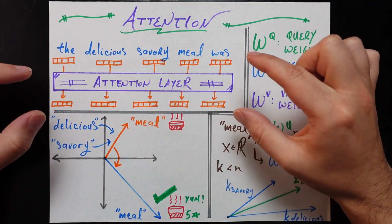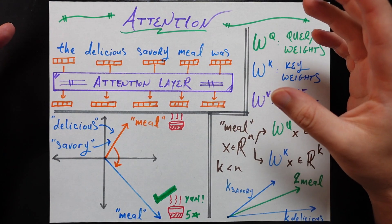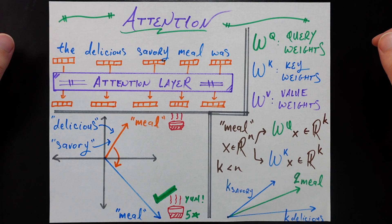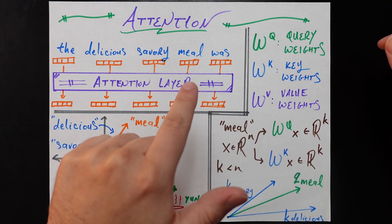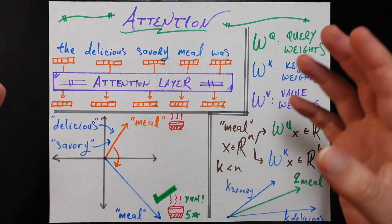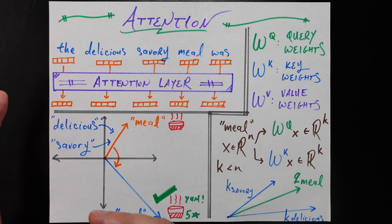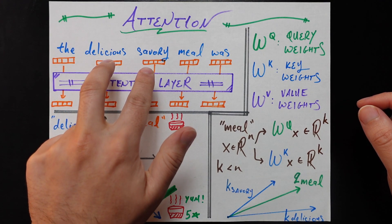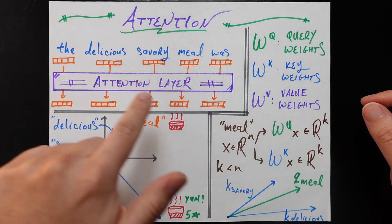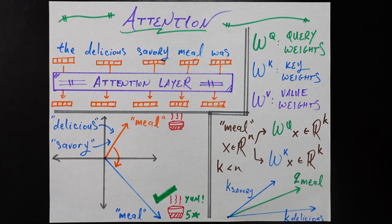Let's make that concrete using our example. What would we expect the attention layer to do? The goal is to predict the final word, which is going to be some sentiment corresponding to a meal that is delicious and savory. Doing that accurately requires knowing what the noun is — knowing if it's a meal or a movie — and also knowing what the modifiers on that noun are, namely that it's a delicious savory meal. So if I was the attention layer, I would try to make sure that the two adjectives and the noun pay a lot of attention to each other's vectors, because collecting all that information in one place is going to be really helpful in predicting what that final word should be.